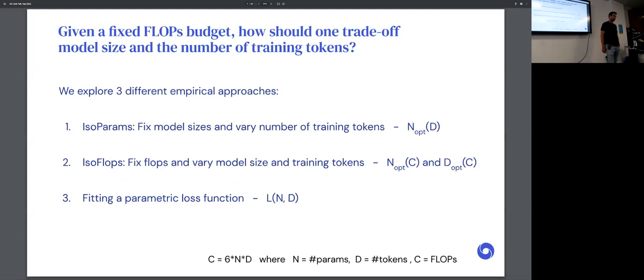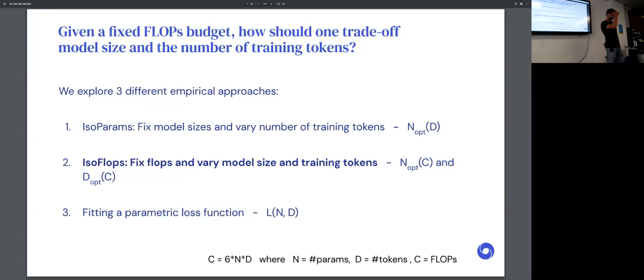To answer this question, we have three different empirical approaches in this paper. The first one I call iso-params, where we're trying to model the optimal number of model parameters as a function of training tokens directly. You can do this by fixing the model size and varying the number of training tokens for various runs. The second one is iso-flops, where instead of fixing the model size you fix the flops and vary the model size and training tokens accordingly. You can then model directly and explicitly the optimal number of training parameters and tokens as a function of the compute budget. The third approach is more explicit because we directly model the final loss as a function of the training tokens and training parameters. The second approach is the cleanest one, so I'll go into this one in more detail.